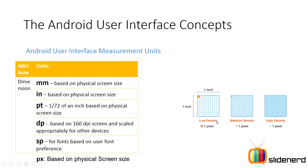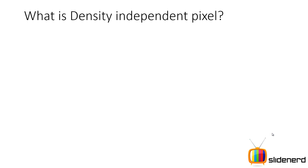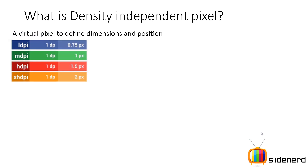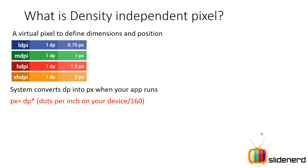DP covers low, medium, high, and extra high density. A device independent pixel is a virtual pixel where you define your dimensions. You say 100 DP and you don't worry about how big it looks on different devices — Android takes care of that. The system converts DP into pixels when your app runs using this formula: pixels = dp × (dpi / 160).